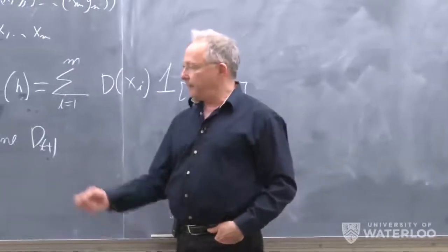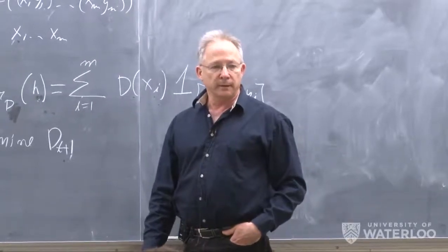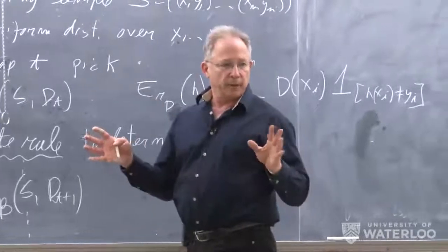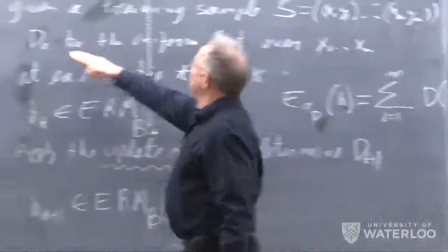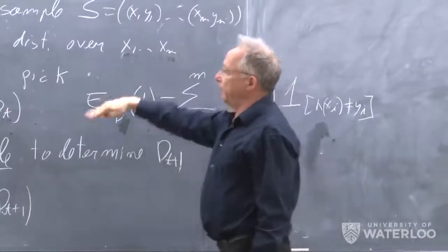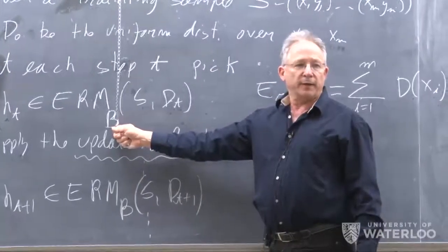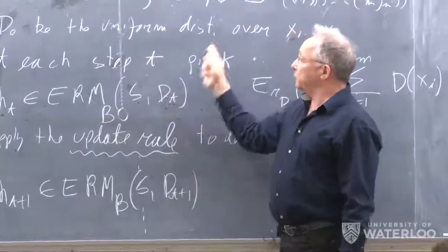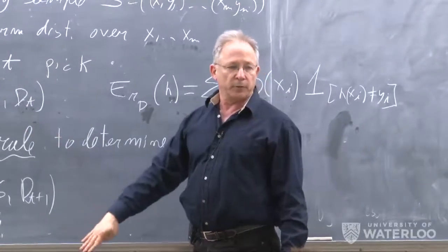The original distribution d_0 is the uniform distribution over the sample points, each getting weight 1/m. Since B is a restricted class, it's not likely we'll find something with zero error, so every h in B will make some errors. We then update the distribution, giving more weight to points where the first h erred and less to those where we were correct, and keep going.